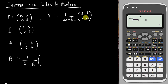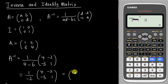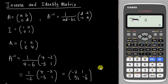A and D swap places to become 4 and 1, while B and C become negative — negative 2 and negative 3. So A inverse is 1 over negative 2, multiplied by the matrix [4, negative 2; negative 3, 1]. Multiplying through: 4 × (1/−2) = −2, negative 2 × (1/−2) = 1, negative 3 × (1/−2) = 1.5, and 1 × (1/−2) = −0.5. The calculator gives these in decimal form.